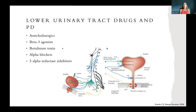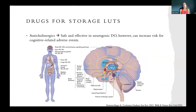When looking at lower urinary tract drugs in Parkinson's patients, the categories include anticholinergics, beta-3 agonists, botulinum toxin, alpha blockers, and 5-alpha reductase inhibitors. For the storage phase — relaxing the bladder to prevent detrusor overactivity, urgency, frequency, and incontinence — the most commonly used drugs are anticholinergics, which inhibit the M2-M3 receptors. They are safe and effective in neurogenic detrusor overactivity, but there is a concern regarding cognitive-related adverse events, as well as common side effects such as constipation and dry mouth.